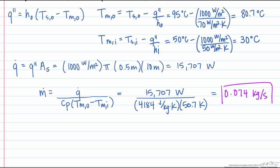So this is a good example of having to use different expressions for the heat transfer rate to calculate mean temperatures in and out, and finally, a mass flow rate.